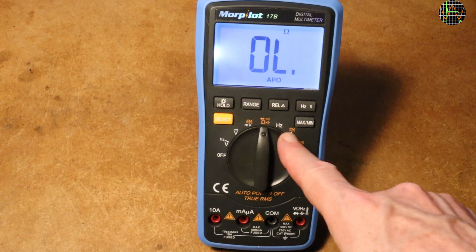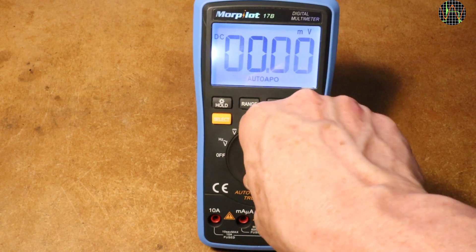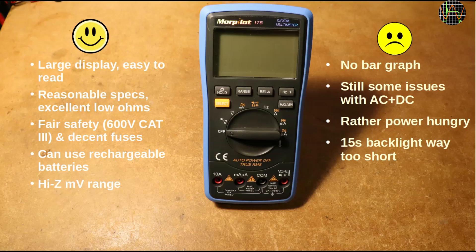Otherwise no complaints and the large display makes it easy to read from quite a distance. There are not many shortcomings on the Morpilot 17B. A bar graph would have been nice, especially on such a large display.